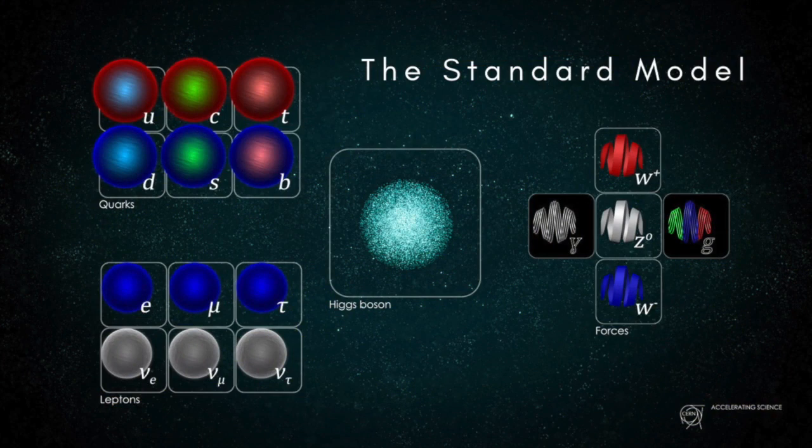One of the major outcomes of work in unifying electromagnetism and the weak nuclear force was the so-called standard model of particle physics, which neatly describes all the elementary particles in nature and the forces between them.